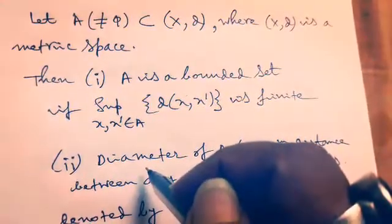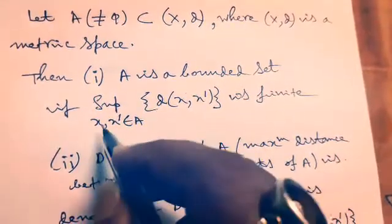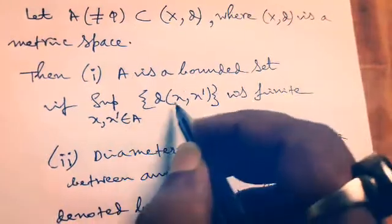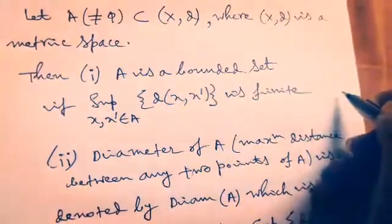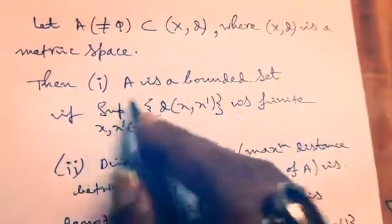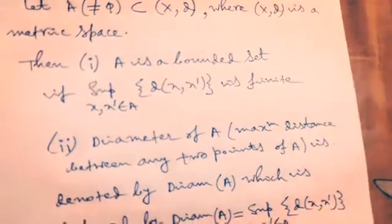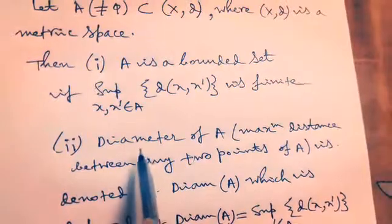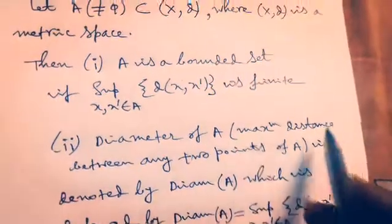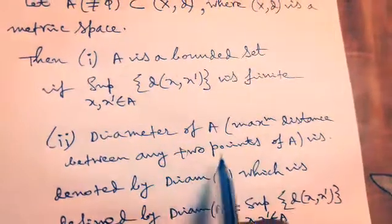And already we know that bounded set means, if we call supremum, there is a maximum distance between any two points x, x prime arbitrarily defined, is finite, that is less than infinity. We maintain these conditions. And for the next condition, which we maintain, that is a basic definition of the diameter of A, that is the maximum distance between any two points of A.